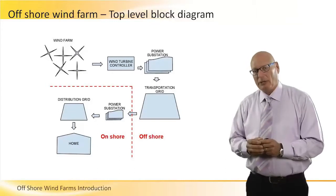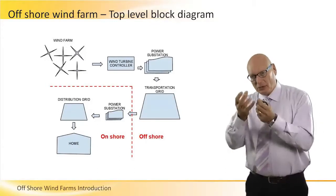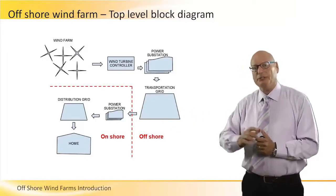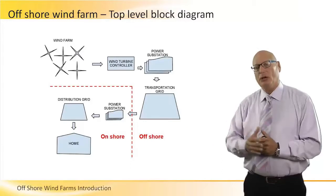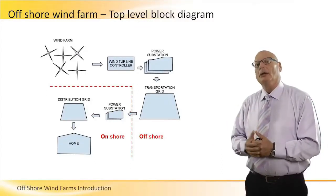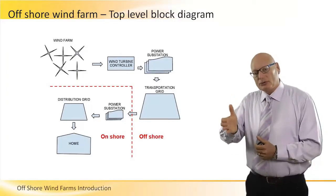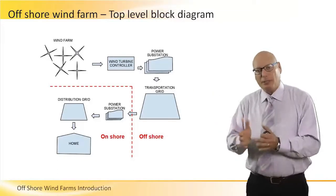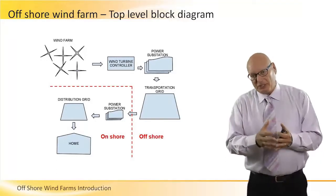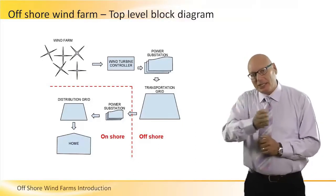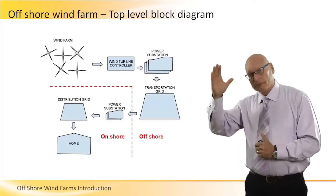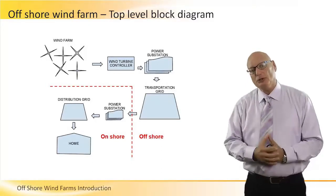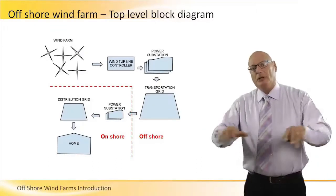We will discuss in depth what a cable is and see its contents. The transportation grid runs 20, 30, sometimes 40 kilometers to the onshore, where it meets a power station to step the voltage down — stepped up offshore, stepped down onshore. After stepping down through several stages from 200 kilovolts down to 11 or 15 kilovolts, it goes to a distribution grid and is then distributed to various customers.